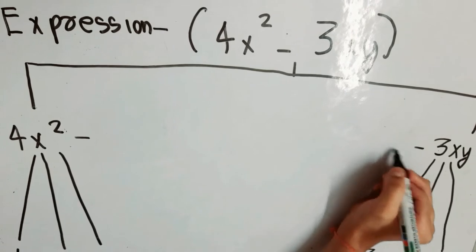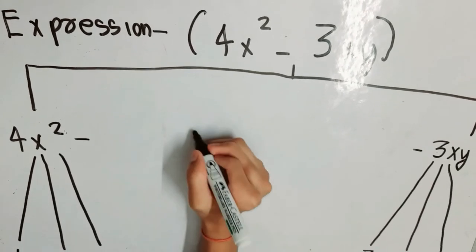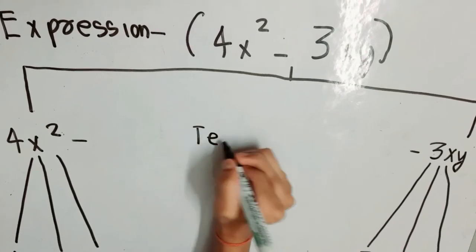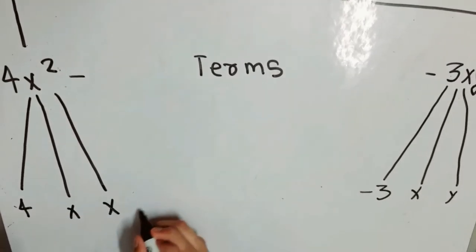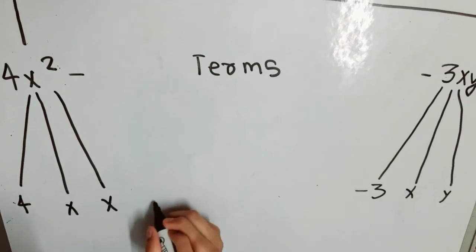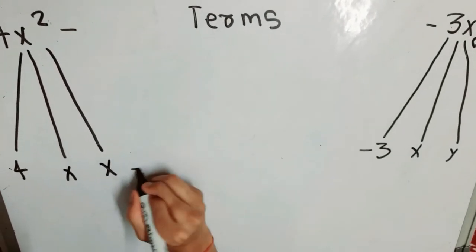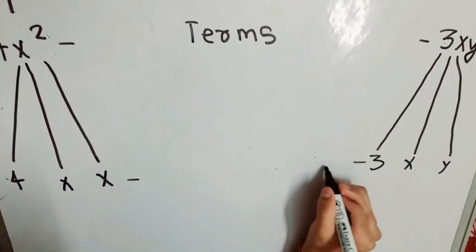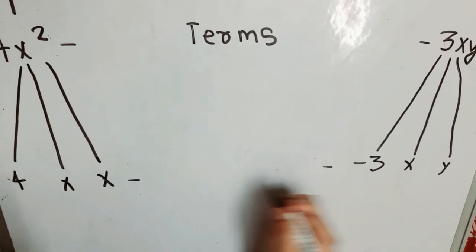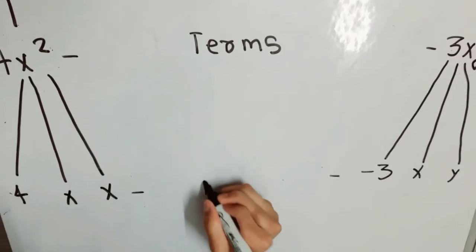So 4x² and −3xy are called terms, and their individual parts — 4, x, x and −3, x, y — are called factors.